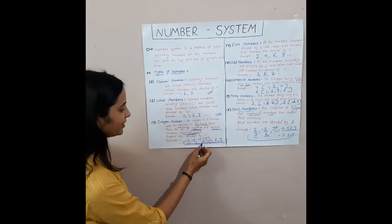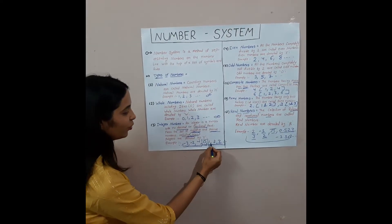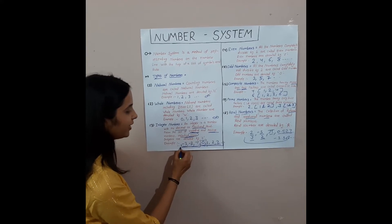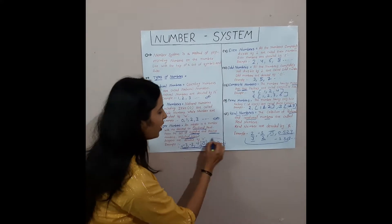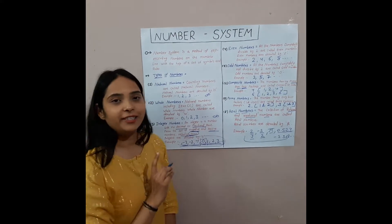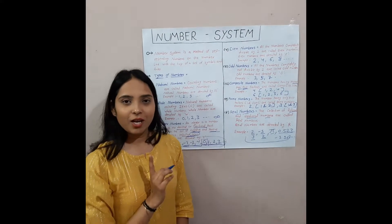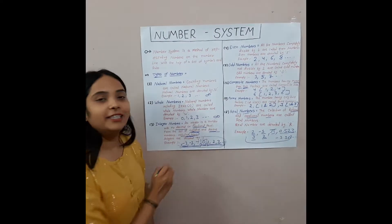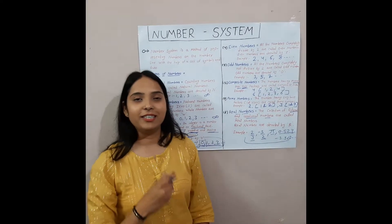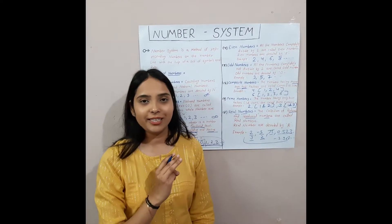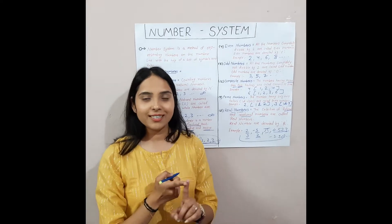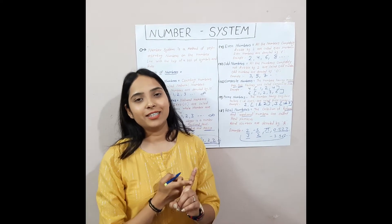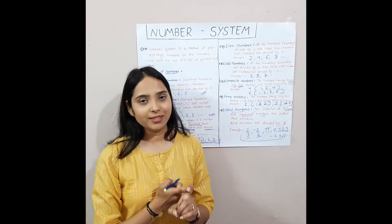Integer numbers include 0, 1, 2, 3, minus 1, minus 2, minus 3 — these are all integer numbers. Integer numbers are divided into three types: first is positive integer, second is negative integer, and third is zero integer.